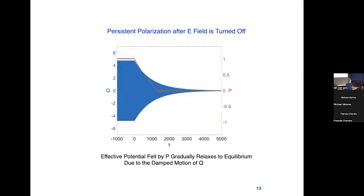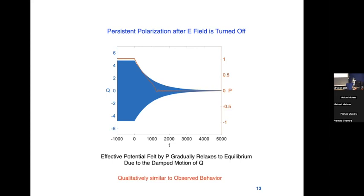We also find persistent polarization. Our numerical experiments and calculations were done for a harmonic field, but when we turn the field off, we find a persistent polarization because P gradually relaxes to equilibrium due to the damped motion of the high-frequency mode. This is qualitatively similar to the observed behavior, even though the timescales reported experimentally are much greater than those accessible in our calculation.